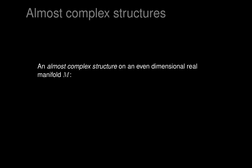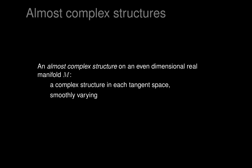An almost-complex structure on an even-dimensional real manifold M is a complex structure on each tangent space. That means each tangent space of M is a complex vector space. So M itself might not be complex, but each tangent space is somehow made into a complex vector space, and this is a smoothly varying complex structure in the tangent spaces.